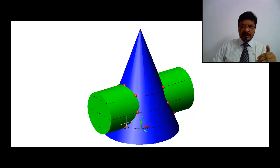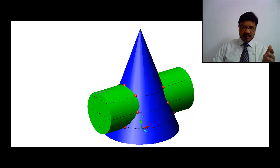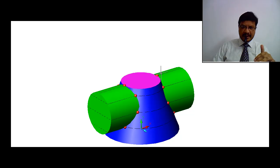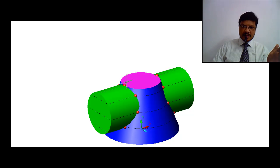To get this line of intersection, we will use the cutting plane method. We take a plane just touching the cylinder and cutting the cone — this is the first cutting plane. Since the cutting plane is just touching the cylinder, we get a line, and the top portion of the cone is cut to give a circle. The intersection points of this circle and this line give two points — the starting points of the curve of intersection.